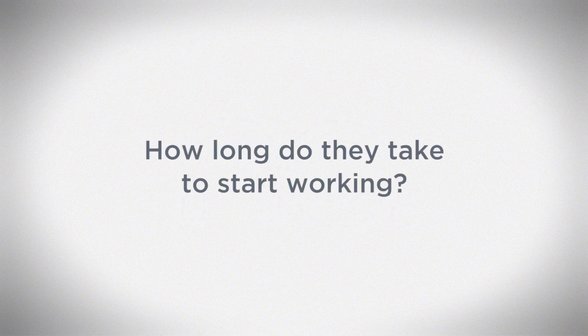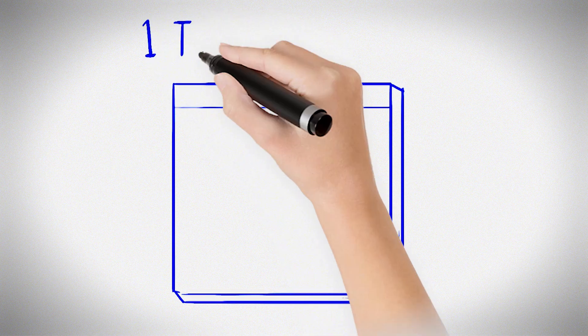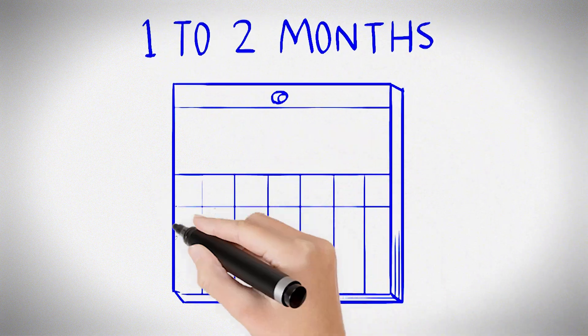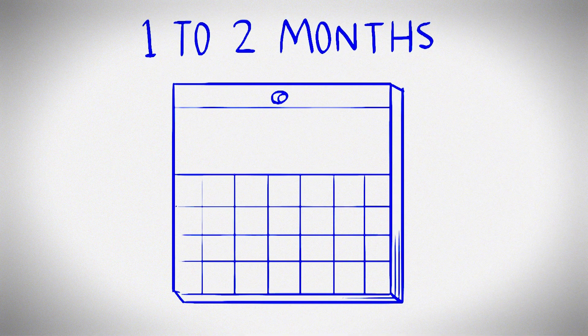How long do they take to start working? It can take one to two months for the body to stop making puberty hormones. Everyone's body responds a little differently.